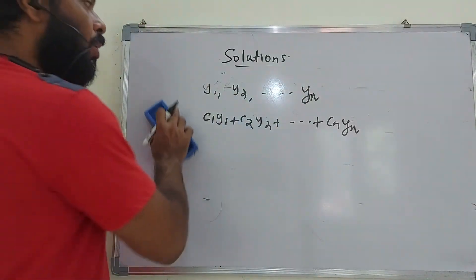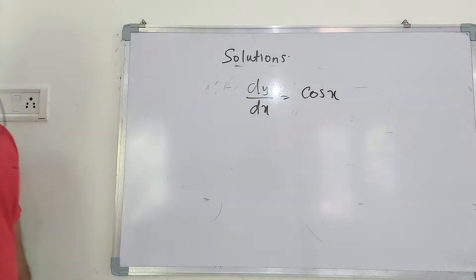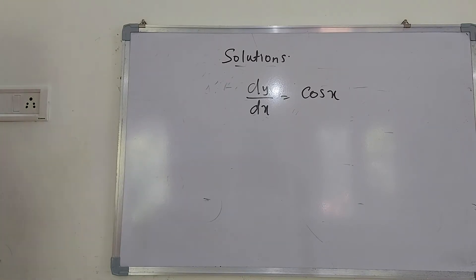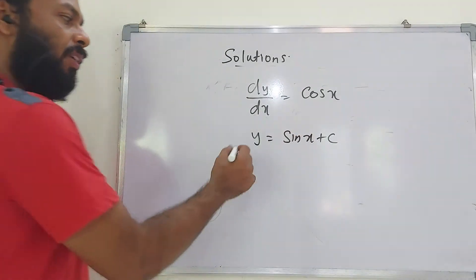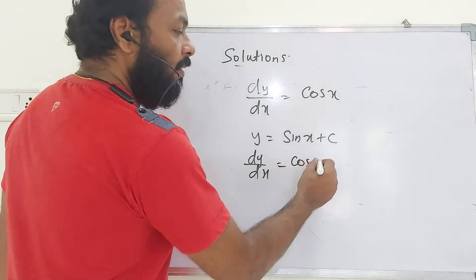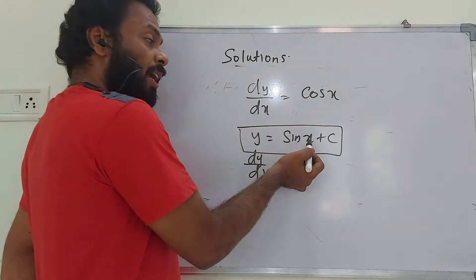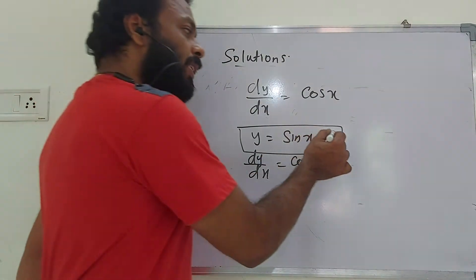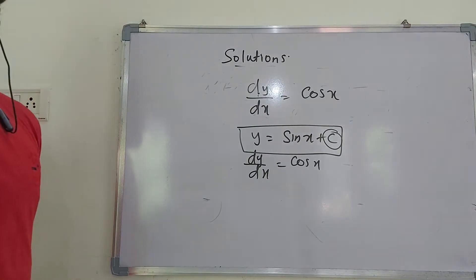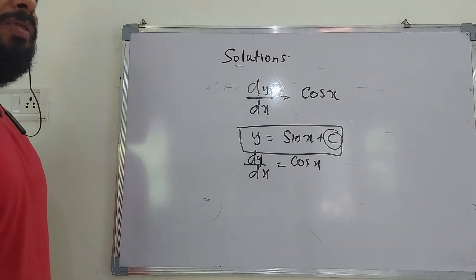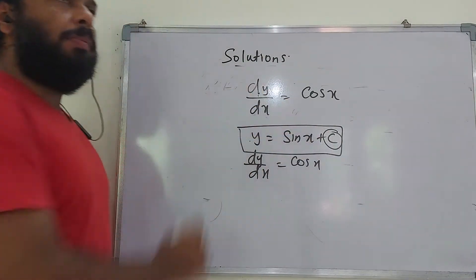Consider the differential equation dy/dx = cos x. This is a first-order differential equation. The relation y = sin x + c, when differentiated, gives dy/dx = cos x, satisfying the given equation. It is a solution involving one arbitrary constant c. Since the number of arbitrary constants equals the order of the equation, y = sin x + c is the general solution.